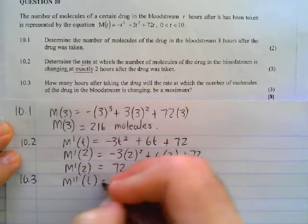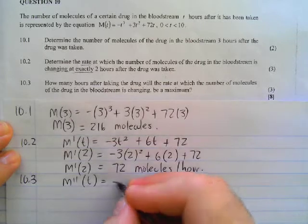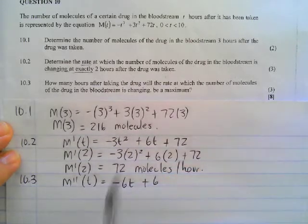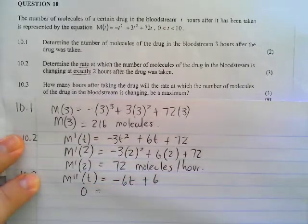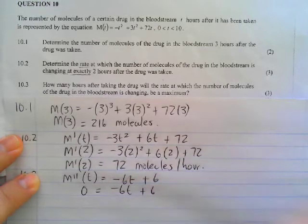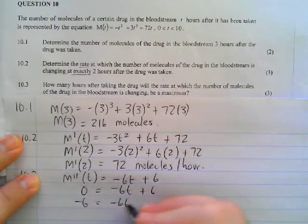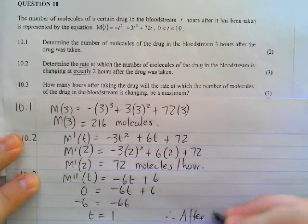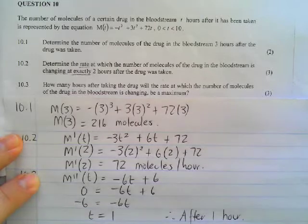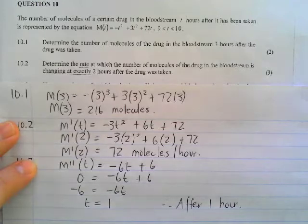In this case, we are going to work out the second derivative, which is -6T + 6. And in order to find the maximum, we are going to make the second derivative equal to 0, -6T + 6 = 0, and solve for T. So -6 = -6T, making T = 1. Therefore, after one hour. Hope you followed what I did there. We're going to do one more question before we move on.